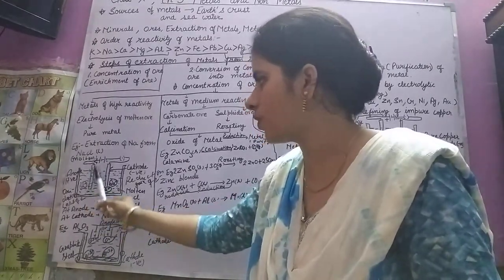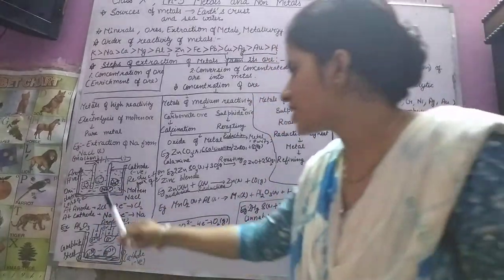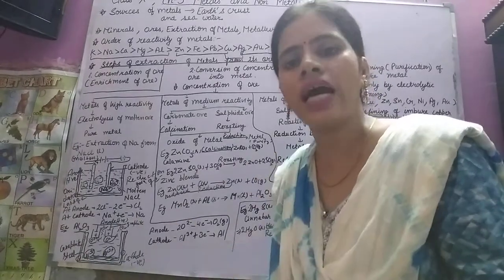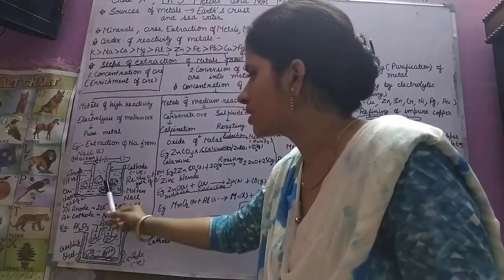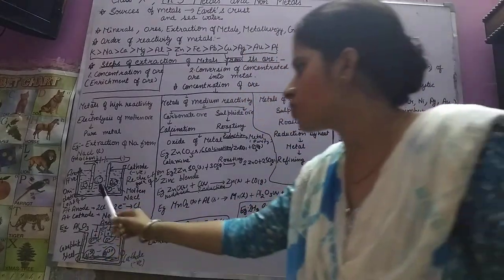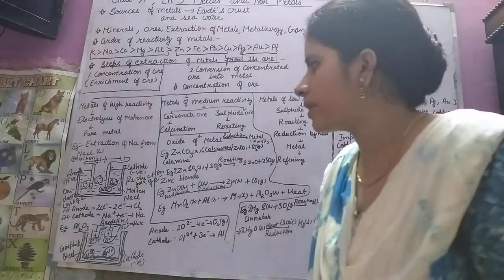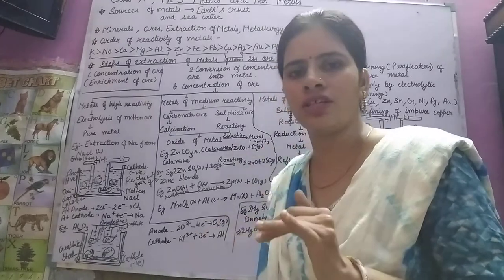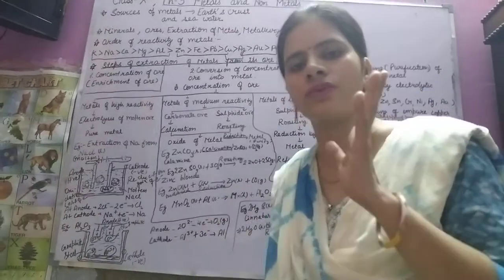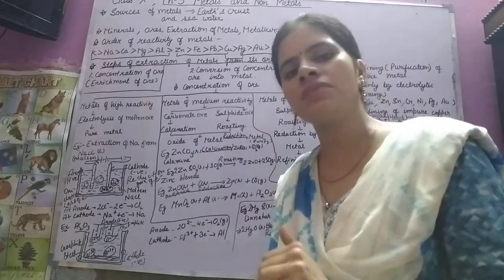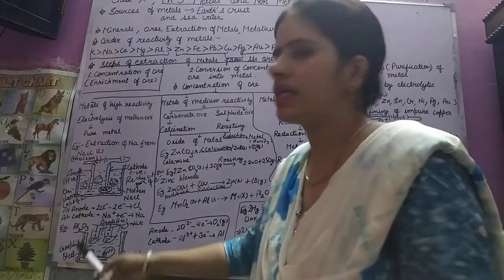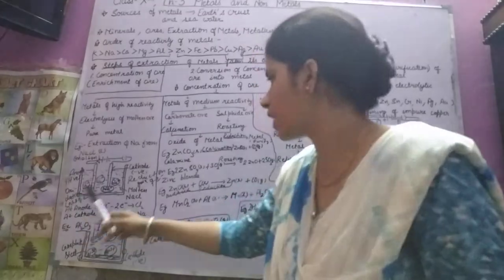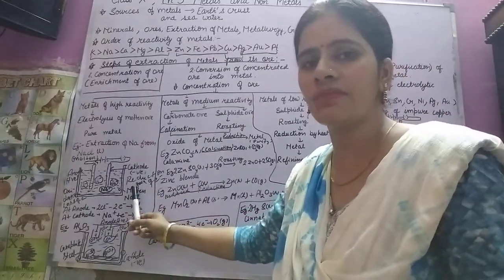When current flows, the molten sodium chloride breaks into sodium ions and chloride ions. Chloride ions, being negative, are attracted towards the positive anode and deposit on it. Sodium ions, being positive, are attracted towards the negative cathode and deposit on it. At the anode, oxidation occurs — which means loss of electrons. At the cathode, reduction occurs — which means gain of electrons.